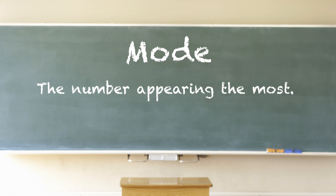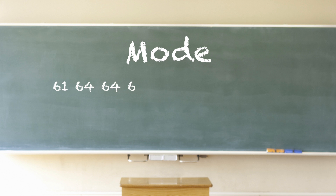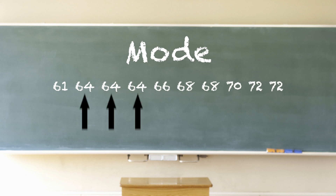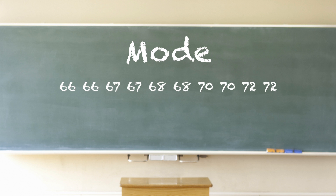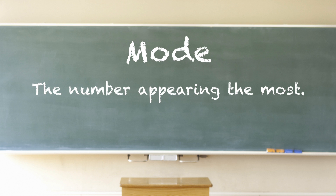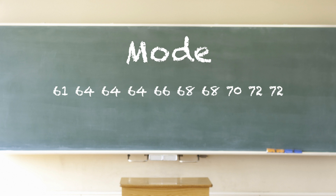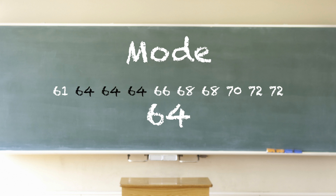Mode: the mode for a set of data is the number appearing the most. If numbers appear an equal number of times, there could be more than one mode. If every number appears an equal number of times, then there is no mode. For example, using the aligned numbers, which number appears the most? If you said 64, you're right — 64 appears the most, so it is the mode.